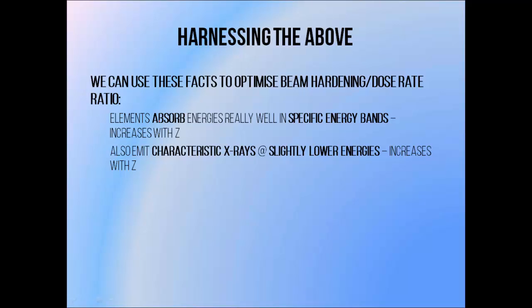We can harness the information on the previous two slides in order to optimize our beam filters to produce maximal beam hardening with minimal dose rate reduction. I mentioned that each atom is better at absorbing photons via the photoelectric effect within a specific energy range. I also mentioned that each atom produces characteristic X-rays within a specific energy range as well. This tends to be slightly lower than the energies at which absorption is increased. Both of these effects occur at higher energies as the atomic number increases.